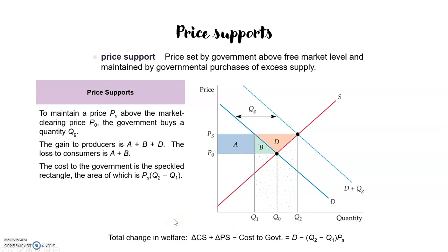The total change in welfare for society is the result of adding the change in consumer surplus, plus the change in producer surplus, plus the cost to the government. That is: (−a − b) + (a + b + d) − PS × (q2 − q1). At the end, the change in welfare equals d minus (q2 − q1) × PS. This is the change in welfare with the price support. The second option is the production quota.